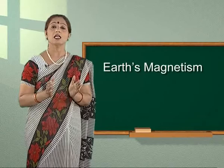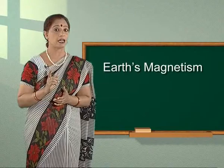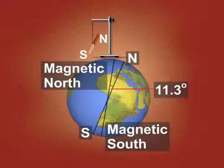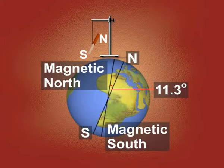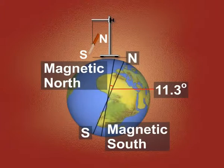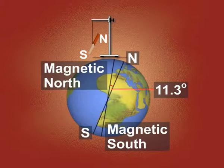Thus, in reality, the north magnetic pole behaves like the south pole of a bar magnet inside the Earth and vice versa. The axis of the dipole does not coincide with the axis of rotation of the Earth, but is presently tilted by approximately 11.3 degrees west of the axis of rotation of Earth along geographic north and geographic south.